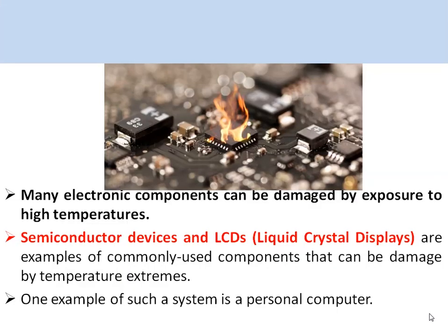Many electronic components like diodes, transistors, microcontrollers, microprocessors, and displays will be damaged when exposed to high temperature. In these electronic components, leakage current is produced, and this leakage current doubles for every 10 degree rise in temperature. Increase in leakage current will again increase the temperature, and this continuous process is known as thermal runaway, which is one of the causes of failure of electronic components due to high temperatures.